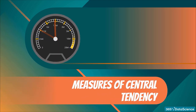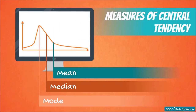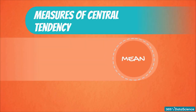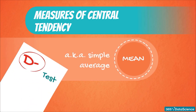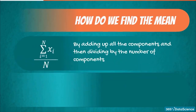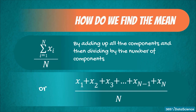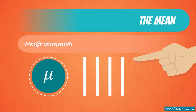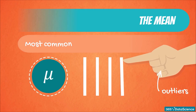This lesson will introduce you to the three measures of central tendency: mean, median, and mode. The first measure we will study is the mean, also known as the simple average. It is denoted by the Greek letter mu for a population and x-bar for a sample. We can find the mean of a dataset by adding up all of its components and then dividing by their number. The mean is the most common measure of central tendency, but it has a huge downside — it is easily affected by outliers.